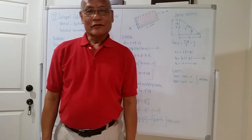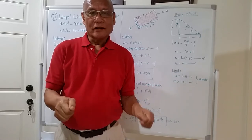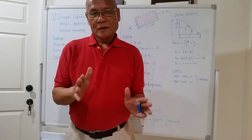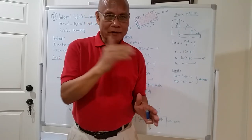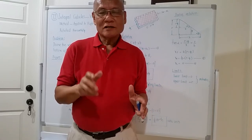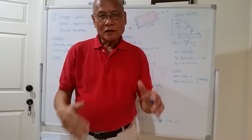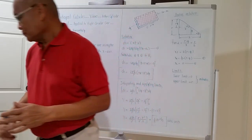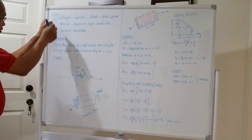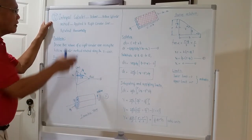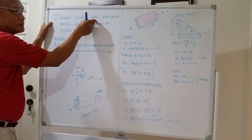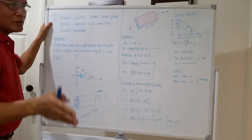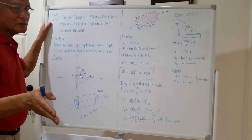Professor David J. de los Reyes, former professor of electrical engineering. This afternoon's topic is lesson number 72 on integral calculus — the hollow cylinder method applied to a right circular cone. We will derive the formula for the volume of a right circular cone using the hollow cylindrical method.